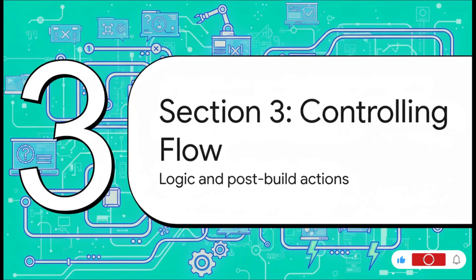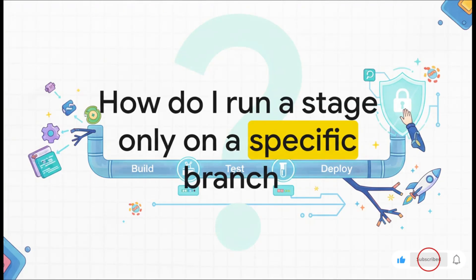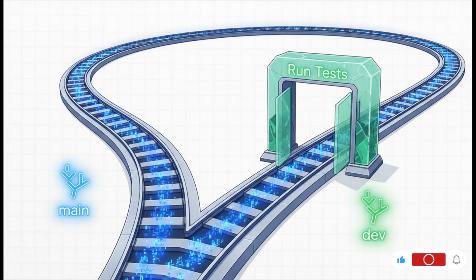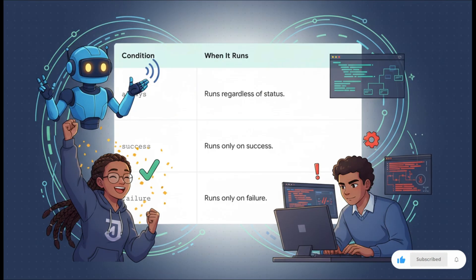A basic pipeline is cool, but real-world projects need to be smarter. Let's add conditional logic and post-build actions. You probably don't want to deploy to production every time someone pushes to a feature branch — so how do we control which stages run? The answer is the 'when' directive. You add a 'when' block inside a stage and tell it exactly when it should run. 'branch dev' literally means this stage will only run if the build is for the dev branch — any other branch Jenkins just skips it. For post-build actions, like sending a Slack notification or cleaning up, you use a 'post' block at the end of your pipeline. Inside 'post' you can say 'always' for cleanup, 'success' for a victory message, or 'failure' to send out critical alerts.